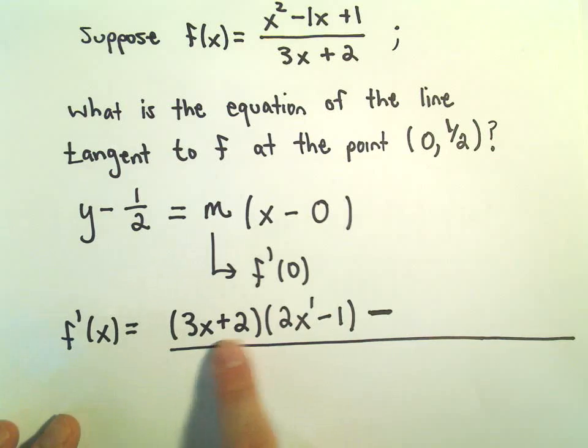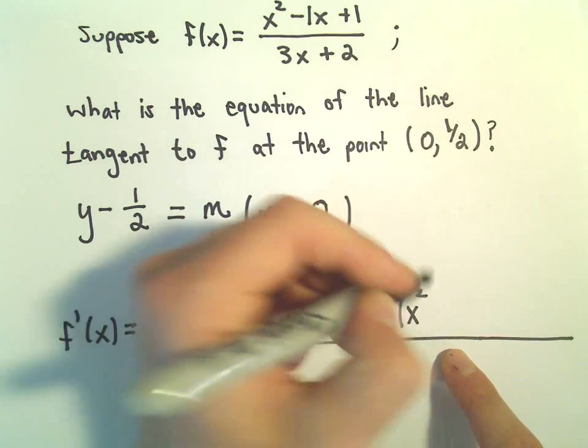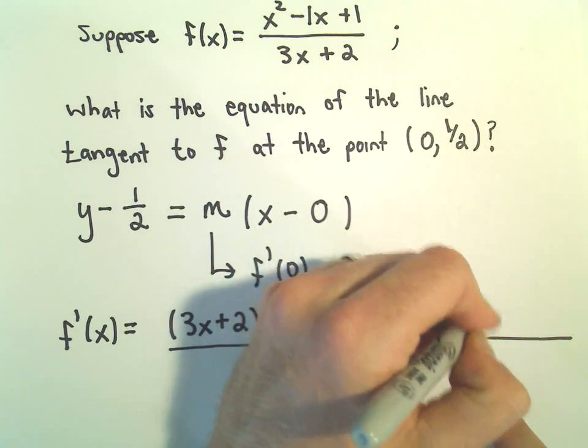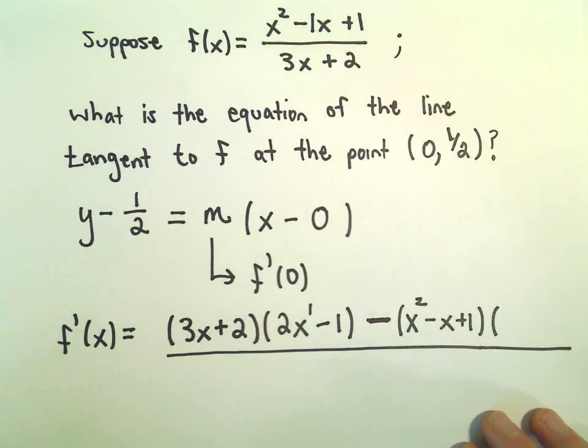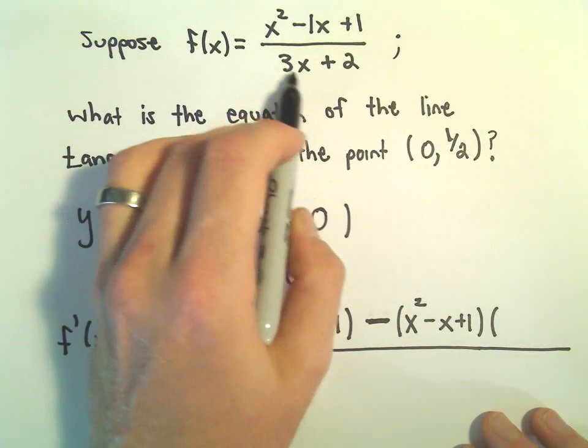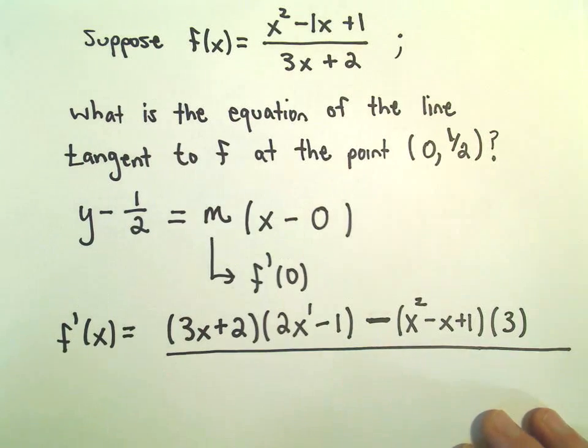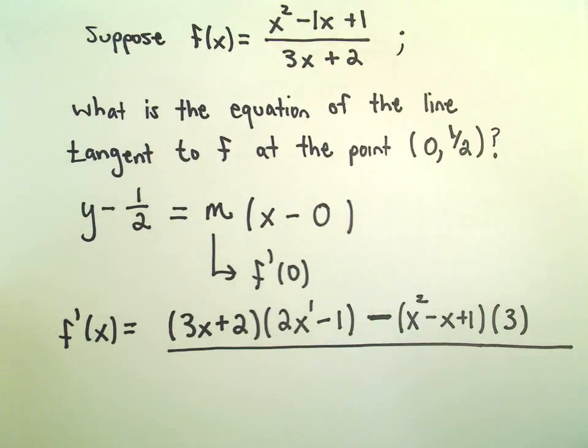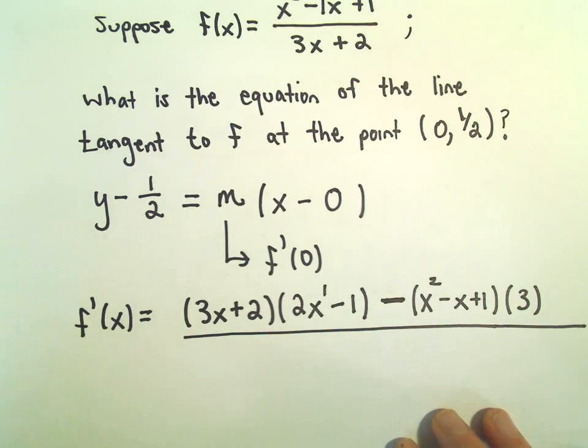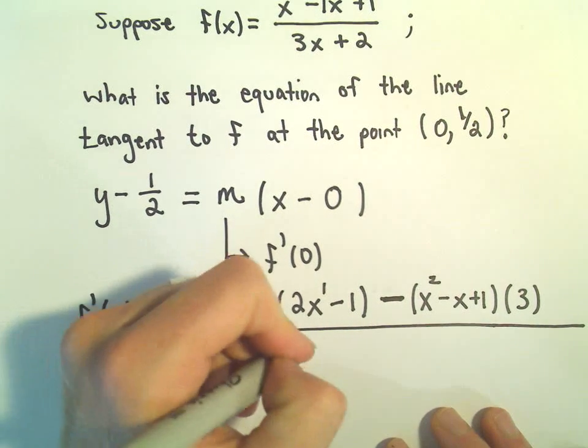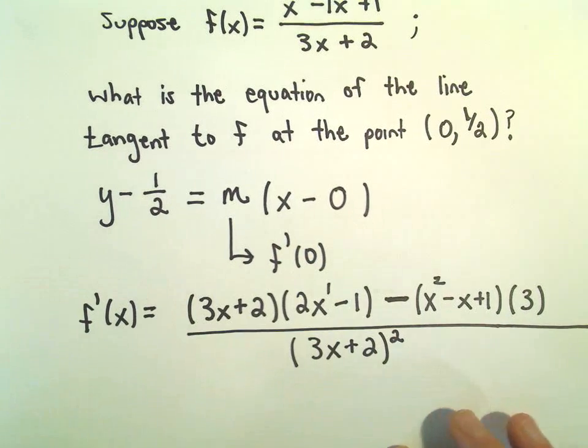And then we'll put a minus sign in between. So the bottom times the derivative of the top minus the stuff in the top. So x² - x + 1. And then we have to multiply by the derivative of the denominator. So the derivative of 3x is just 3. The constant, again, just turns into 0 when we take the derivative. And that'll give us the numerator of our quotient rule. And then we take whatever's downstairs, 3x + 2, and we square it.